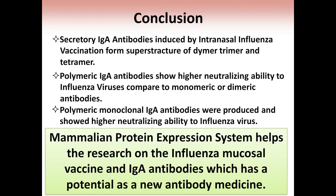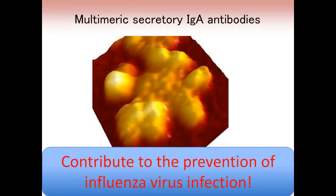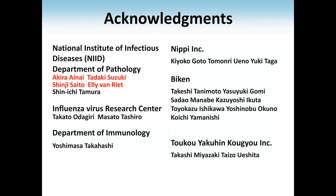The polymeric monoclonal IgA antibodies were produced and showed higher neutralizing ability against influenza viruses. Multimeric secretory IgA antibodies like these contribute to the prevention of influenza virus infection. Thank you very much. I'd like to thank my colleagues listed here. Thank you very much for your attention.